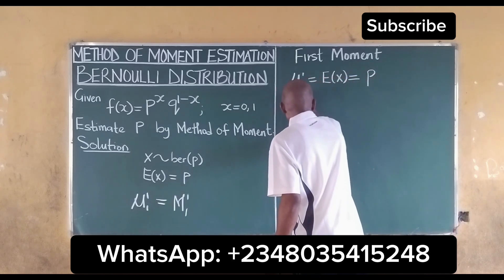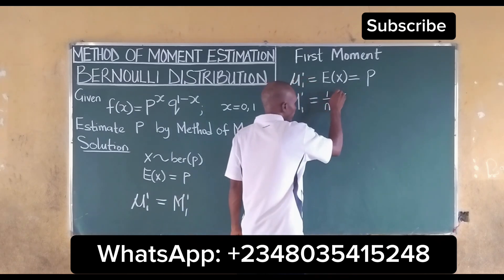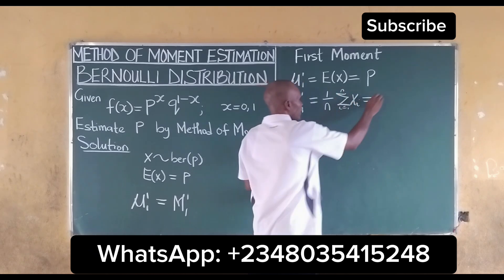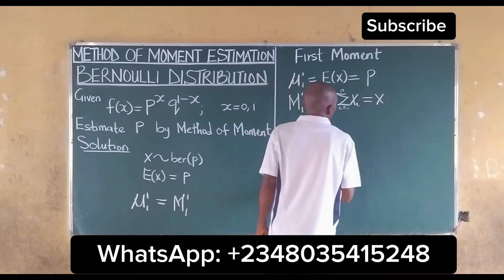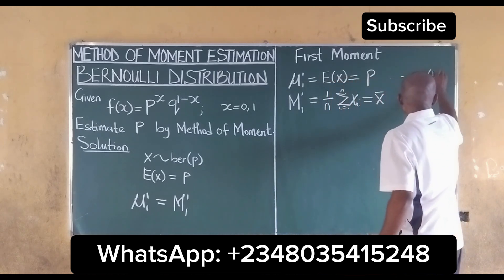As i running from 1 to n. Of course we know that this is our mean, so we take this as our equation 1, and we take this as our equation 2.